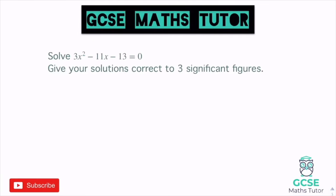Now in this one, the process isn't any different, but we've got something that's going to change here - it's negative 11 in front of x. So if I write down my values of a, b, and c: a equals 3, b equals negative 11, and c equals negative 13. If I go ahead and plug in all these values, I've got to have a look at what changes. The start of our quadratic formula is minus b, but b is already negative. So if b is already negative, that's going to turn into positive 11. So on the top there we have positive 11 - minus b, if b is already negative, that's going to become a positive number.